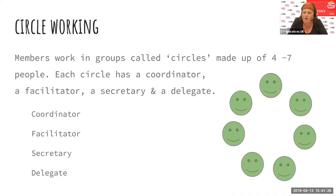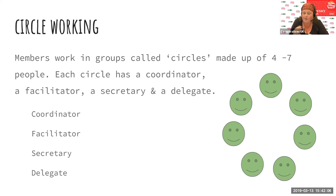In sociocracy, we're talking about circles and circle working. In an organization running sociocratically, everybody is a member of at least one circle. Circles are small working groups — about four to seven people is the ideal number. Within these circles, every circle has four key process roles: a coordinator role, a facilitator role, secretary, and delegate. The coordinator, sometimes referred to as the leader role, takes the overview of the work of the circle. The facilitator facilitates your meetings. The secretary has responsibility for taking minutes and keeping information.